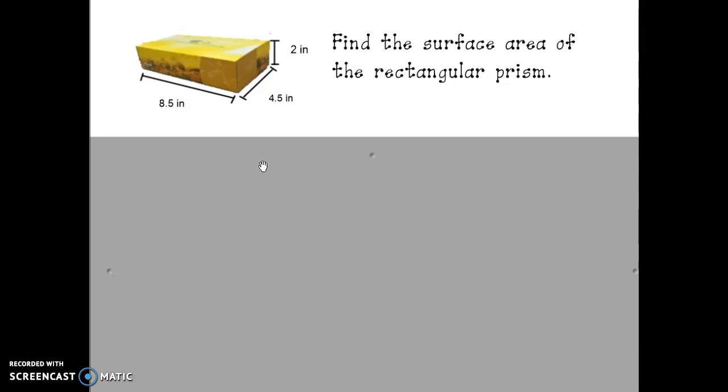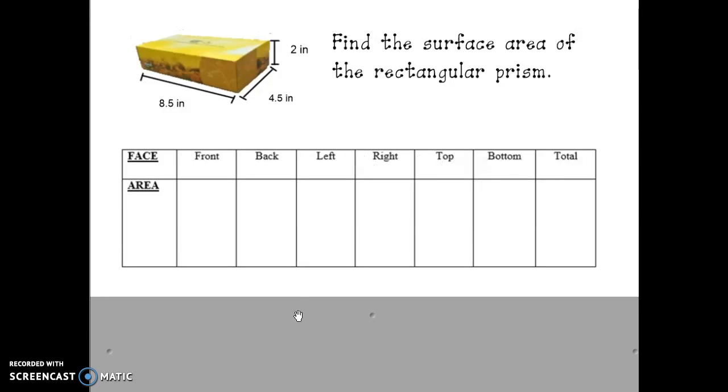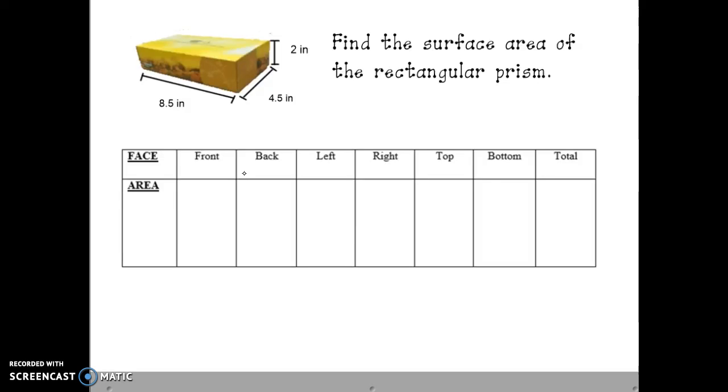Let's find the surface area of the tissue box. Make sure on your note sheet to write down the names of all of the faces like I have here in my table in order to keep your work organized. We're going to start by finding the area of the front face, which I'm shading in blue. Since the front face is a rectangle, we're going to use the formula for area of a rectangle to find its area. So a equals length times width. The length is 8.5, and the width is 2 inches.